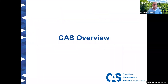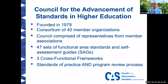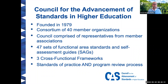Let's begin with an overview of CAS. CAS was founded in 1979 and is a consortium of now 40 member organizations within higher education. The council is comprised of representatives from each of these member organizations. This is helpful to know because when CAS develops standards of practice for functional areas, these standards are approved by all of these member organizations through a consensus building process, including experts in those specific fields. So when CAS approves a set of standards, it's really approved by the field for the field.